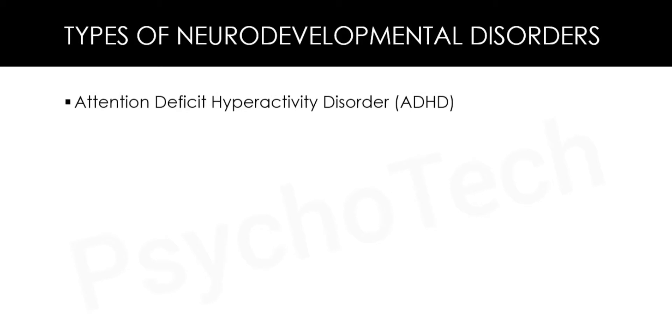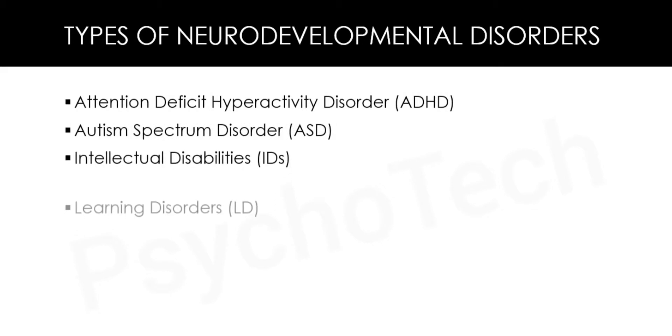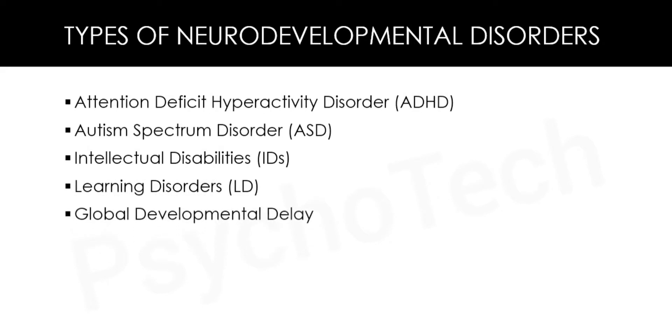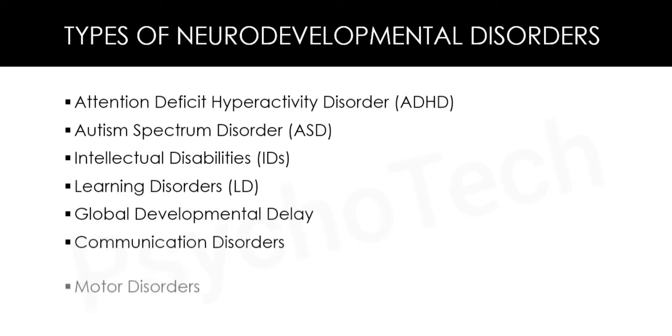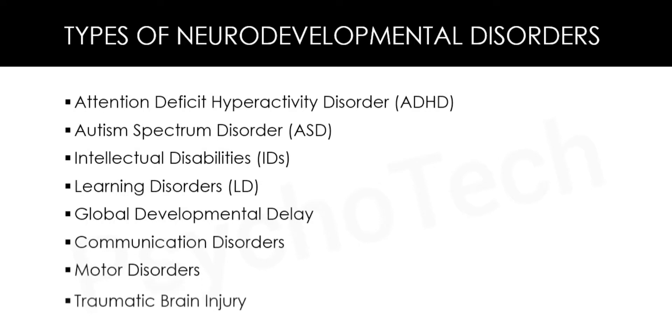Now let us have a look at the types of neurodevelopmental disorders. The types include: attention deficit hyperactivity disorder (ADHD), autism spectrum disorder (ASD), intellectual disabilities, learning disorders, global developmental delay, communication disorders, motor disorders, and traumatic brain injury. We will discuss each one in detail.